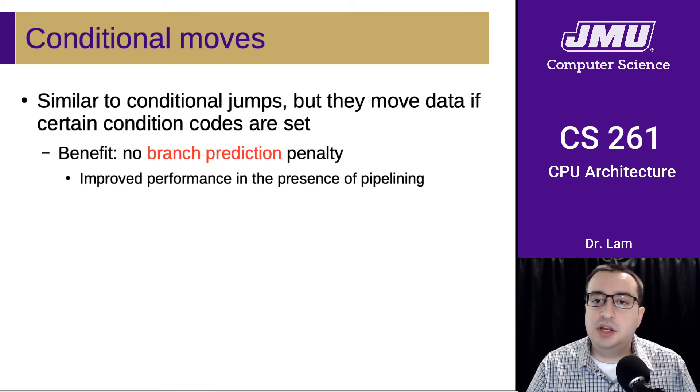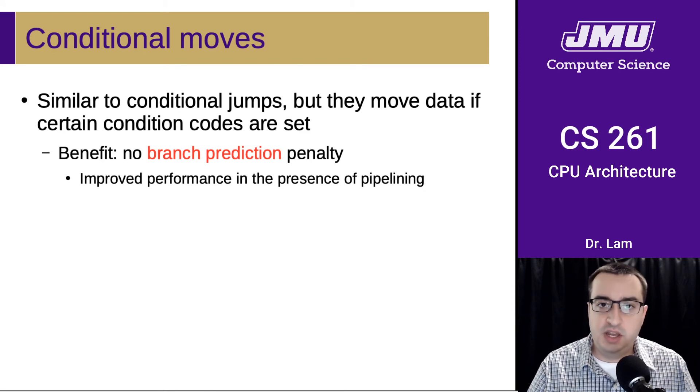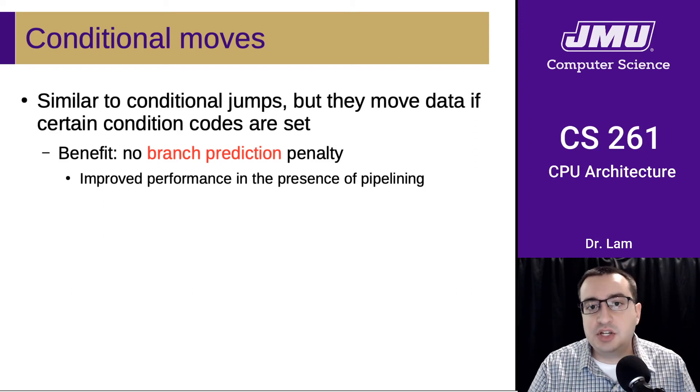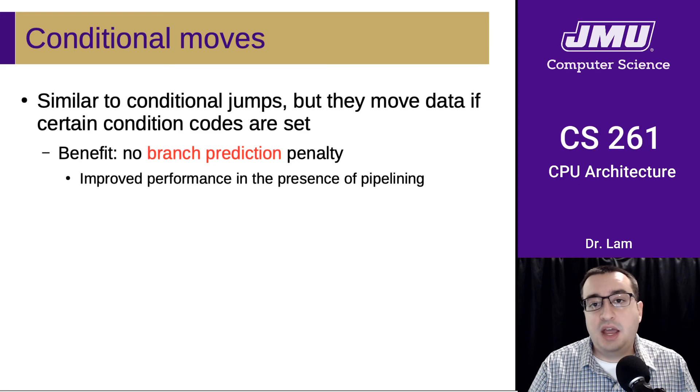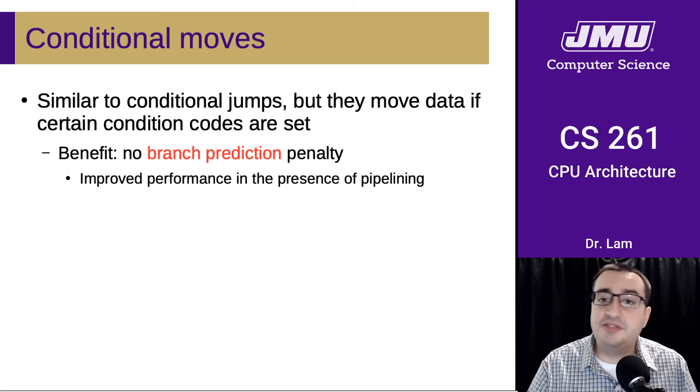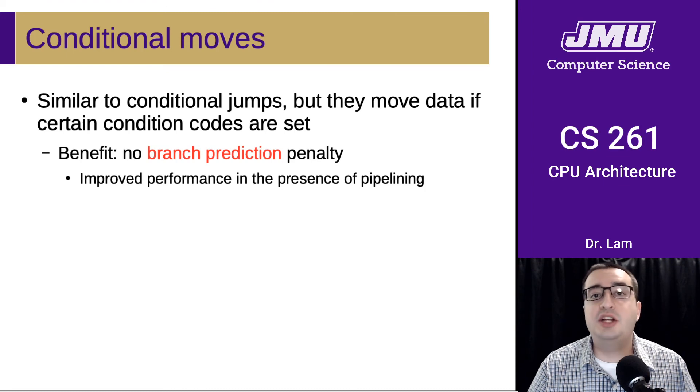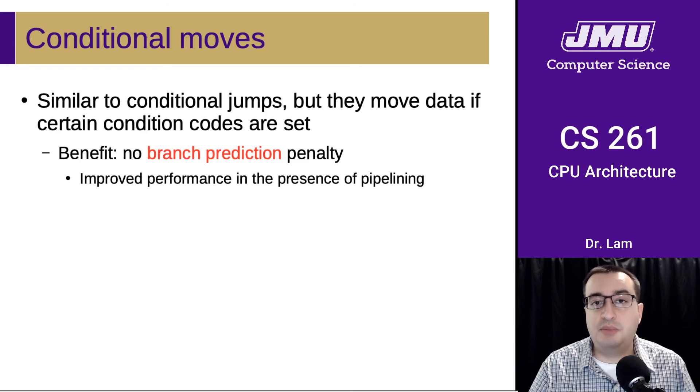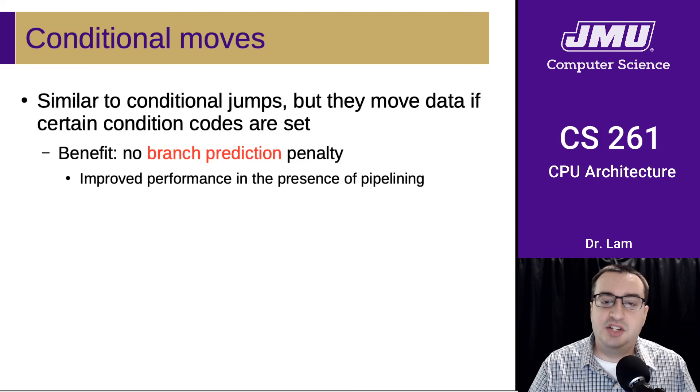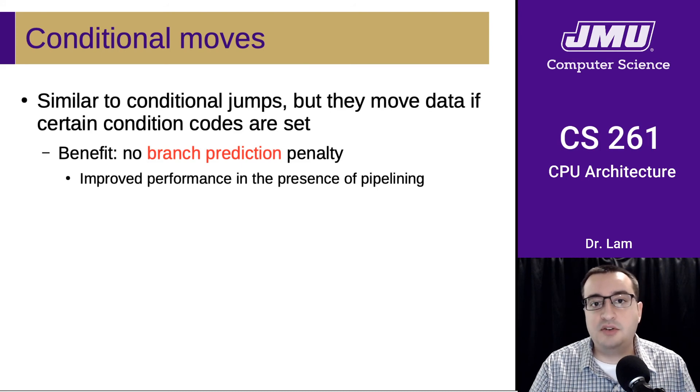At this point, hopefully we can have a greater understanding about why we would want a conditional move in our instruction set. A conditional move is similar to a conditional jump except that it moves data rather than taking a branch or a jump based on condition codes. The benefit here is that we don't have to guess where we're going to go, and so there will be no branch prediction penalty. What this means is that we'll have improved performance in the presence of pipelining. Here's an example where there's a subtle benefit to using one particular kind of instruction over another, and this results in real life performance improvements. That's why it's important to understand these details.